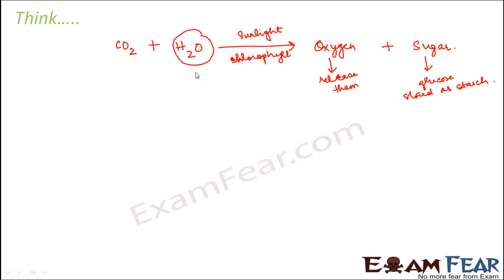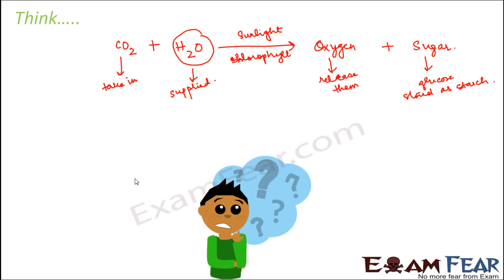Water is supplied to the plants by watering. We all water the plants, so that is how we supply water to the plant. This water combines with carbon dioxide, which plants take in from the atmosphere through their stomata. Whenever the stomata opens, it takes in carbon dioxide and it gives out oxygen.